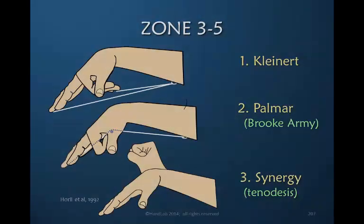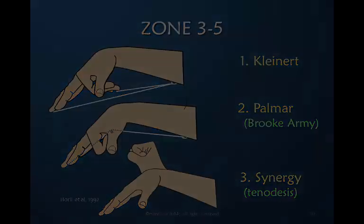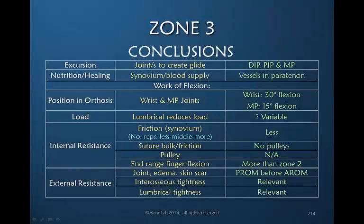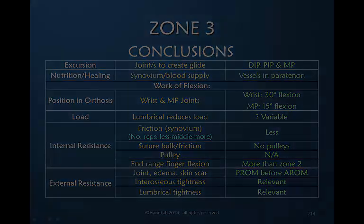The one that includes the wrist becomes more relevant as we're thinking about the more proximal zones. Here, compiled, are all the variables that would affect a flexor tendon repair within Zone 3.